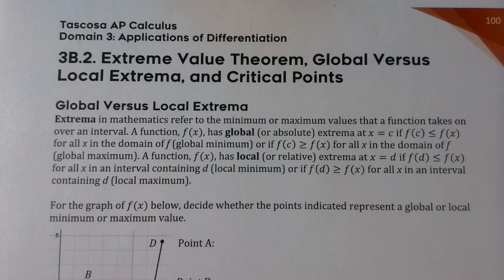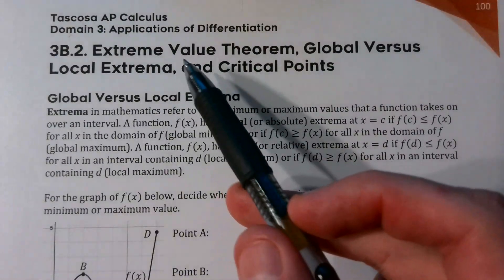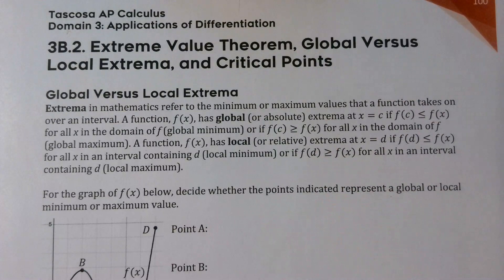In topic 3b.2, we begin a string of several topics where we start talking about the key features of graphs and how they're defined by either the first or second derivatives. This topic is all about defining some important things we're going to work with: the extreme value theorem, the idea of global or local extrema, and the very important idea of critical points.